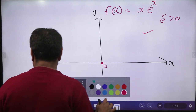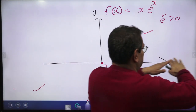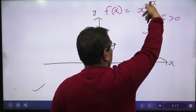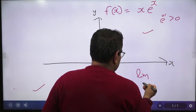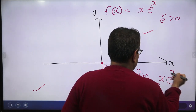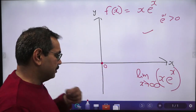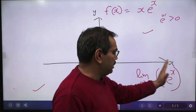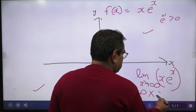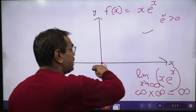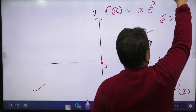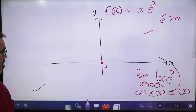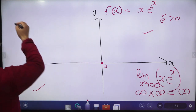Next, check the behavior of the graph as x approaches infinity. Computing lim(x→∞) x·eˣ: x is infinity and eˣ is infinity, so infinity times infinity gives infinity — a determinate form. So as x approaches infinity, the graph goes upward toward infinity on the right side.